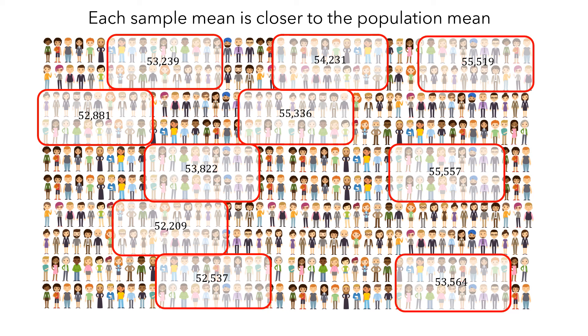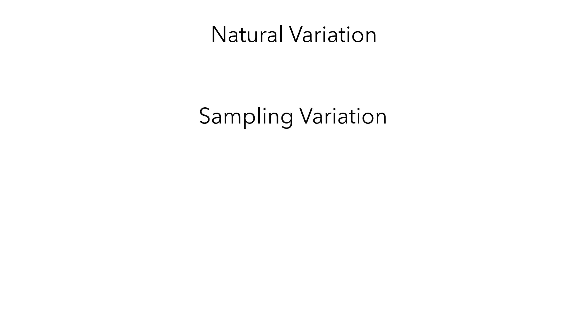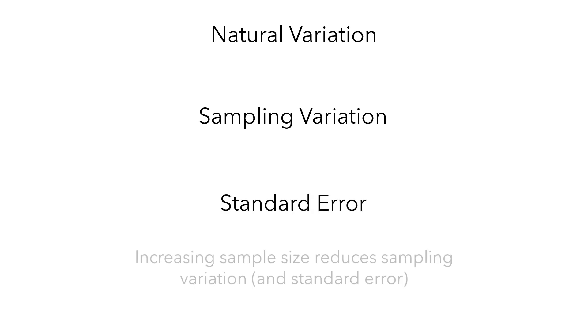Let's recap what we've seen here. We looked at the concept of natural variation among individuals in a population, and saw how the combination of natural variation and sampling produced sampling variation. Sampling variation is measured by standard error. And finally, we saw how increasing the sample size reduces sampling variation, and thus the standard error.